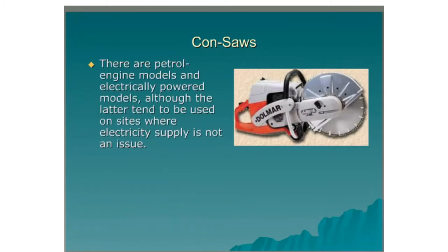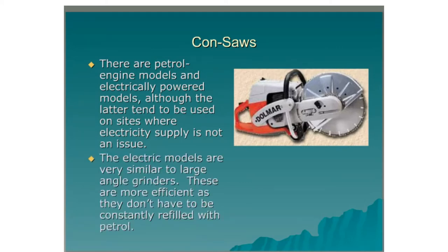Con saws. There are petrol engine models and electrically powered models, although the latter tend to be used on sites where electricity supply is not an issue. The electric models are very similar to large angle grinders and are more efficient as they don't have to be constantly refilled with petrol.